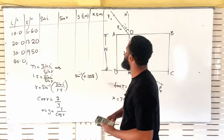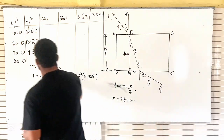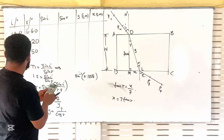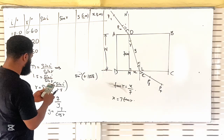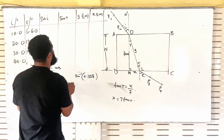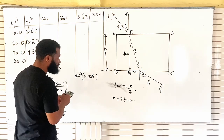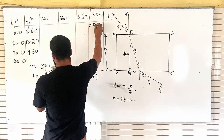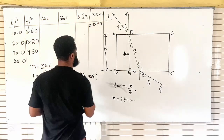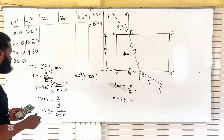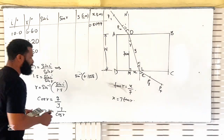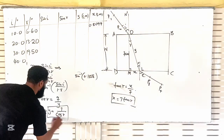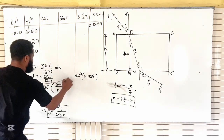I have my R, so I can find my X now. To find X, I will say 7 tan 6.6°. I'm having 0.8099. I have gotten the value for X, I've gotten the value for Y, I've gotten the value for R. So you are covered.